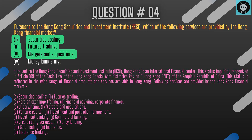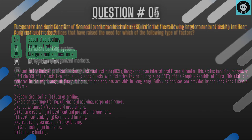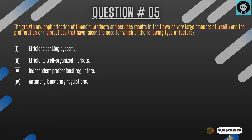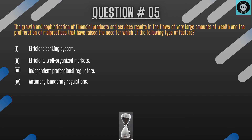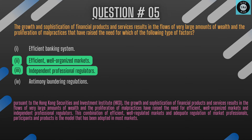The question is: the growth and sophistication of financial products and services results in the flows of very large amounts of wealth and the proliferation of malpractices. This has raised the need for which of the following type of factors? The explanation: the growth and sophistication of financial products and services results in flows of very large amounts of wealth, and the proliferation of malpractices has raised the need for efficient, well-organized markets and independent professional regulators. This combination of efficient, well-regulated markets and adequate regulation of market participants and products is the model adopted in most markets.